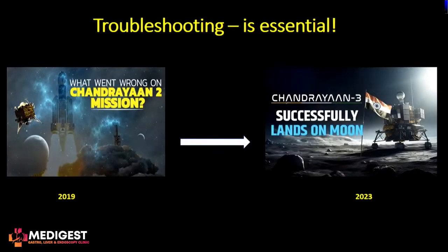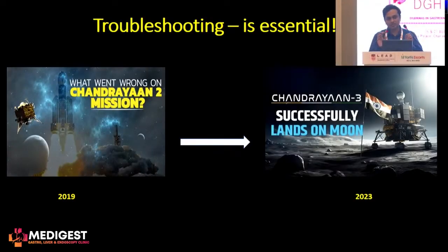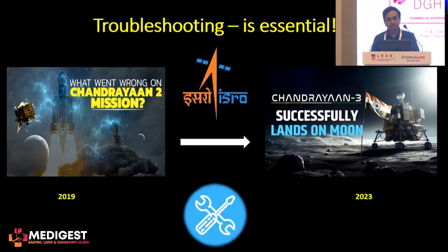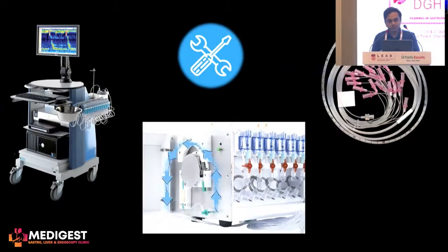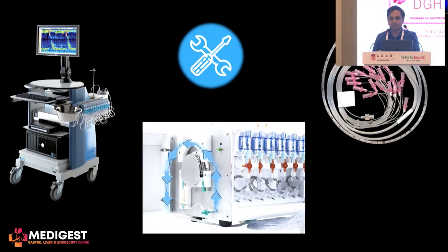Troubleshooting is very essential in many aspects of life. It was actually troubleshooting which landed India on the moon after the failure of Chandrayaan 2 — effective troubleshooting was what helped us land on the moon. Manometry machines are extremely complex machines where a lot of components are involved, including many catheters, capillaries, and metrics which have to be evaluated during the manometry process.